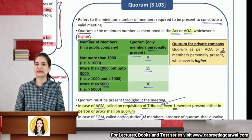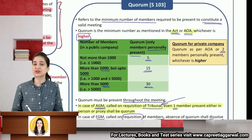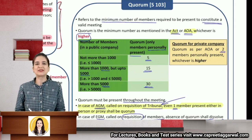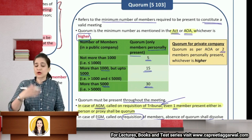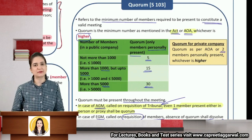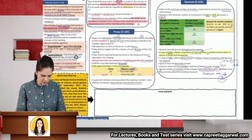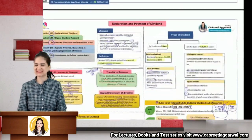For more questions, refer to the CA Inter Law Compiler linked in the description, which has all past exam questions, study material, RTP, and MTP questions arranged unit-wise. With this, we complete the chapter on Management and Administration. Next, we will discuss declaration and payment of dividend.